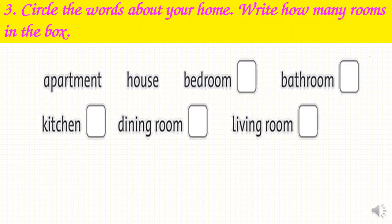Good job everyone. Exercise 3: Circle the words about your home and write how many rooms in the box. Let's say the words with me: apartment, house, bedroom, bathroom, kitchen, dining room, living room. For example, in my house we have a kitchen, so I circle the word 'kitchen' and write number one. Now you continue. You did the task well.